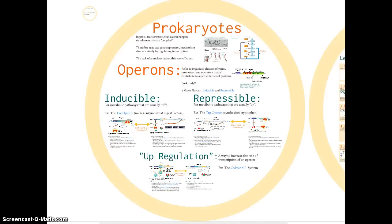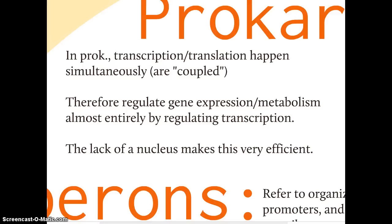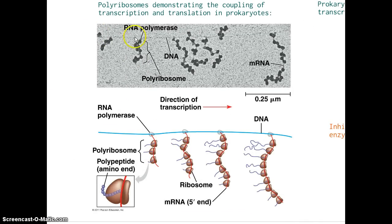Our focus in this section is prokaryotic control of gene expression. Prokaryotes are unique in that they lack a nucleus, so the processes of transcription and translation are essentially coupled or continuous. If you're going to regulate the expression of a gene — regulate whether or not a protein is produced — what makes sense is to control it at the point of transcription. We can visualize RNA polymerase moving along a DNA molecule, synthesizing messenger RNA, while ribosomes immediately attach and translate that information into polypeptides.